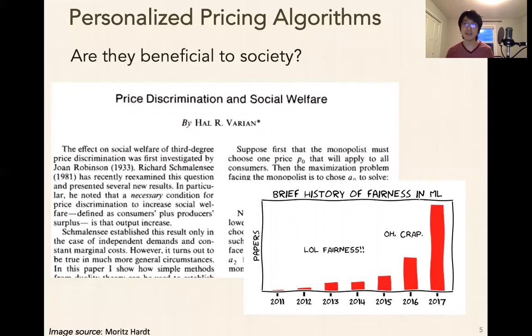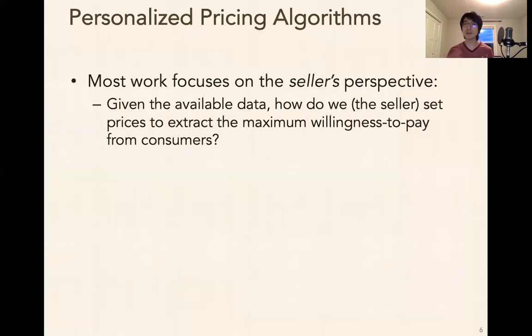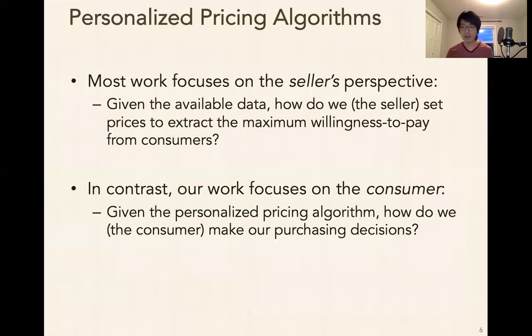It's a really nuanced question about whether or not these algorithms are overall beneficial to society in what ways and in what ways they're negative. I don't really intend to take a stance on that at all. I do just want to say, independent of that, most of the work thus far has been focused on the seller's perspective. These problems ask questions like, given the available data, how do we set prices to extract the maximum willingness to pay to maximize revenue from consumers? Here, we refers to the seller. In contrast, the work I want to talk about today, our work really focuses on the consumer. Given the personalized pricing algorithm is exogenously fixed, how do we make our purchasing decisions? In this case, we refers to the consumer.